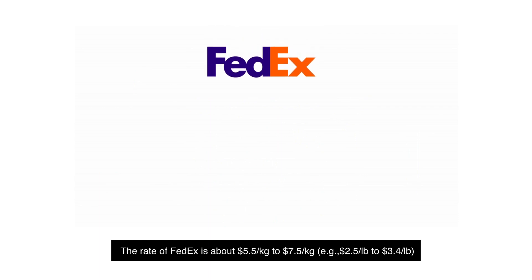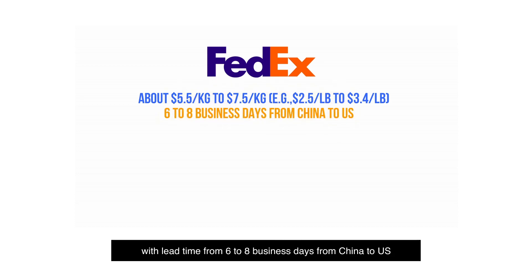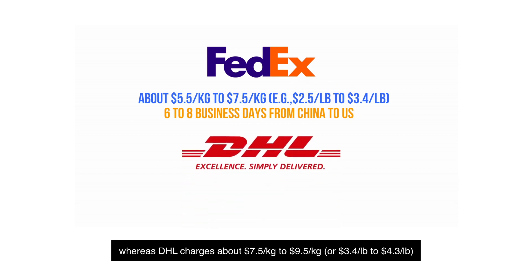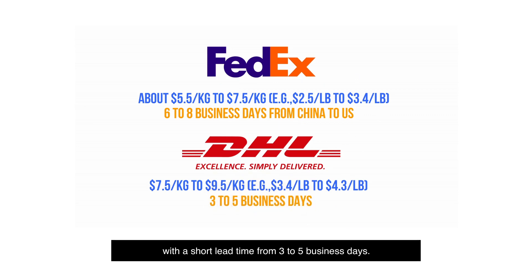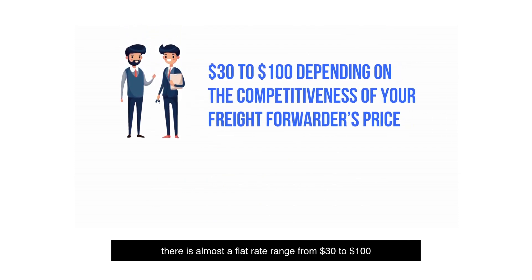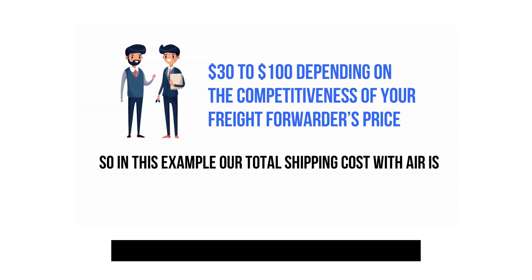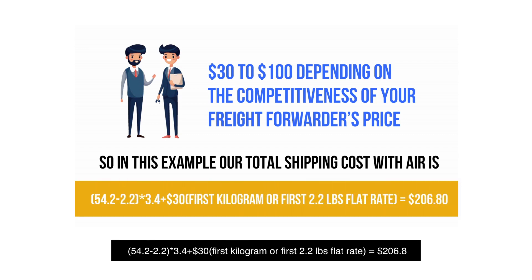The rate of FedEx is about $5.50 to $7.50 per kilogram, or $2.50 to $3.40 per pound, with a lead time of six to eight business days from China to the U.S. DHL charges about $7.50 to $9.50 per kilogram, or $3.40 to $4.30 per pound, with a shorter lead time of three to five business days. For the first kilogram, there's almost a flat rate ranging from $30 to $100, depending on the competitiveness of your freight forwarder's price. So in this example, our total shipping cost with air is: (54.2 − 2.2) × $3.40 + $30 (flat rate for first 2.2 pounds) = $206.80.